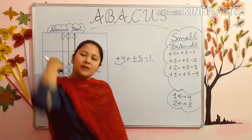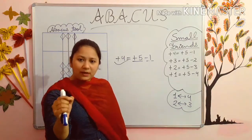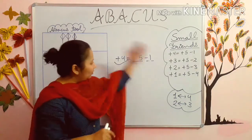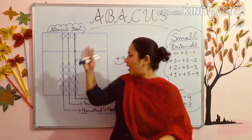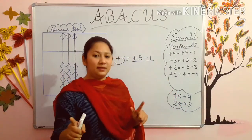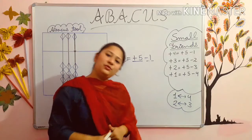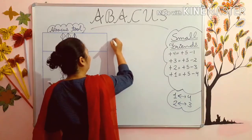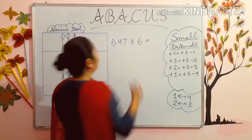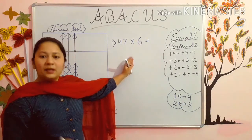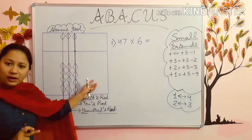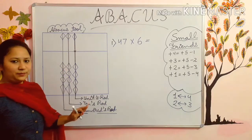So students, we will start our today's topic with the first multiplication sum. In that sum I will use the small friends formula also and the abacus tool also. Make sure you watch every single video and stay tuned to learn more. Now this is your first multiplication sum. We will do this multiplication sum with the help of the abacus tool which I have made on the whiteboard today.